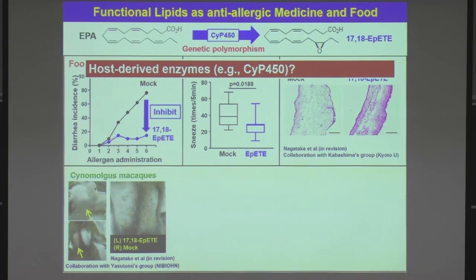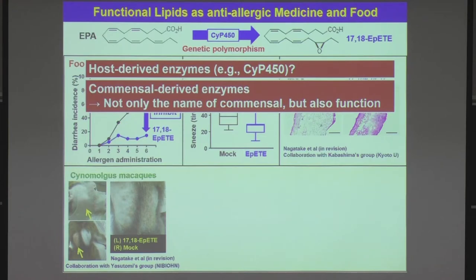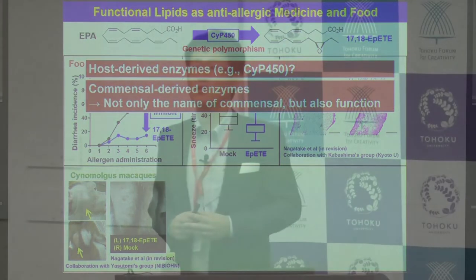We also have to consider commensal bacteria, because they also have enzymes to metabolize lipids. We are now evaluating the involvement of commensal bacteria — not just in terms of their names, but we should consider their functions. If commensal bacteria have different names but the same enzymes, their metabolites may be the same and consequently affect health and immunologic conditions in the same way.